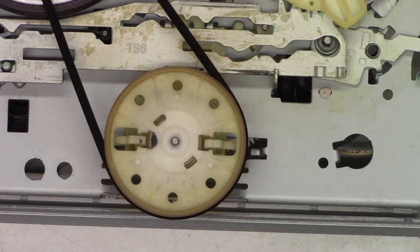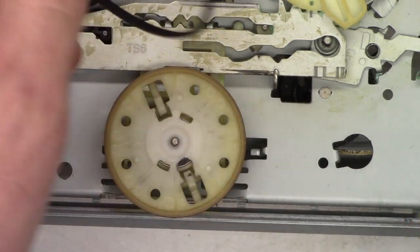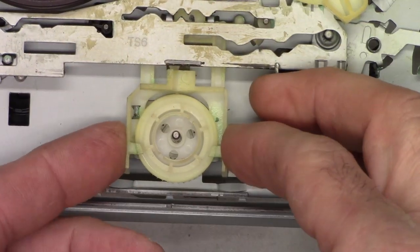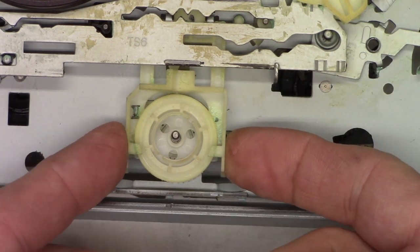And this is the clutch mechanism that allows it to change from a low torque take up mode to a high torque for fast forward and rewind. And we'll try to pop this little ring off. Got it. Take the belt off.